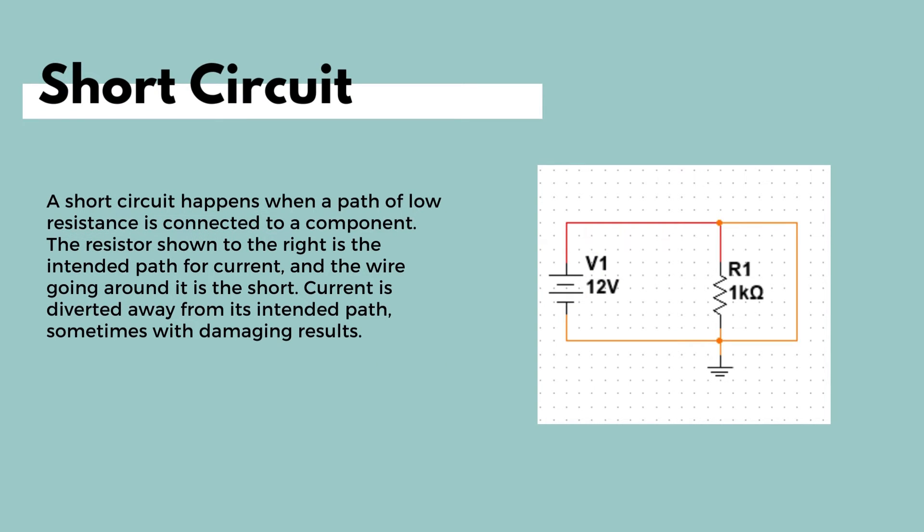Now that we've understood how we can measure resistance using a multimeter, let's take a look at a concept known as short circuit. What is a short circuit and when does it happen? When do you short circuit a circuit? A short circuit happens when a path of low resistance is connected to a component, which usually happens or sometimes happens by mistake. The resistor shown in the slide is the intended path for the current. However, the wire going around it is the short. Therefore, a current is diverted away from its intended path. And this sometimes comes with damaging results. The wire shorts out the resistor by providing a low resistance path for the current.